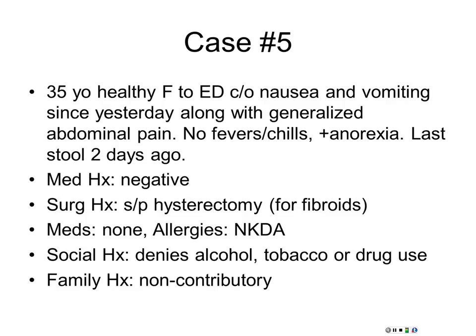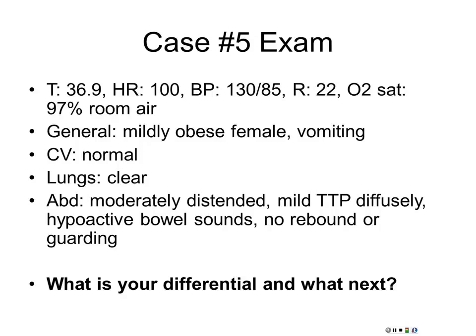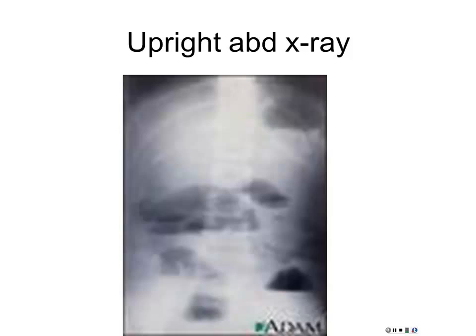Case five: 35-year-old lady in the ED with nausea, vomiting for a day, generalized abdominal pain, last stool two days ago. She had a hysterectomy for fibroids. Mildly tachycardic, moderately distended, mildly tender, hyperactive bowel sounds. The x-ray shows air-fluid levels — this patient is obstructed. Bowel obstruction is always a mechanical and anatomic problem. The most common causes are adhesions from previous surgery, hernias, cancer, or any anatomic process.